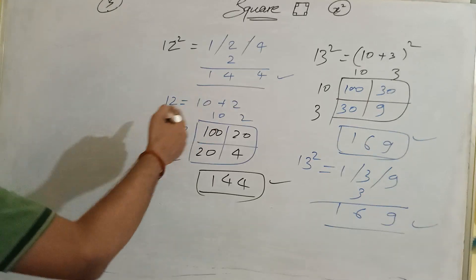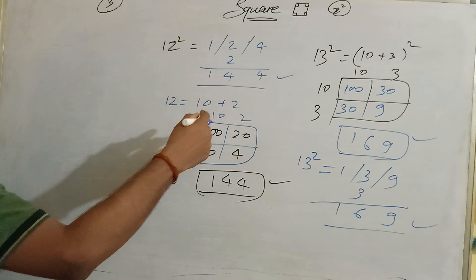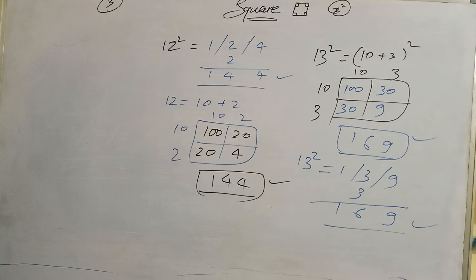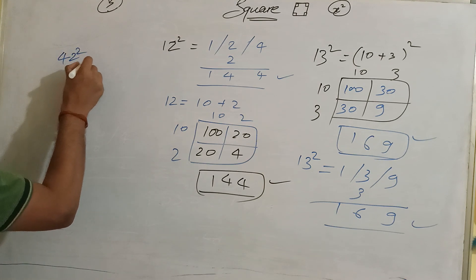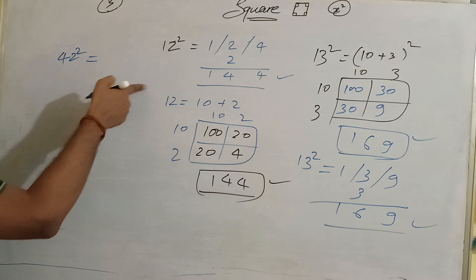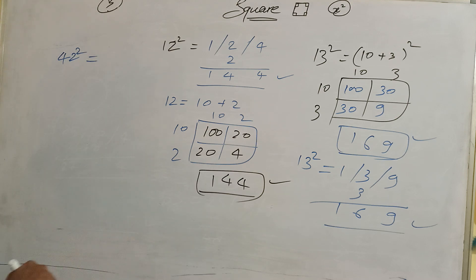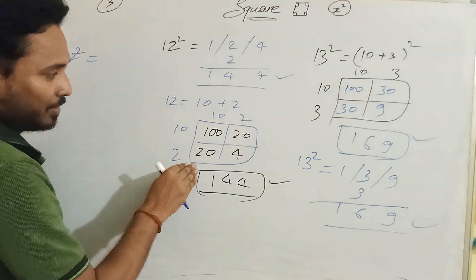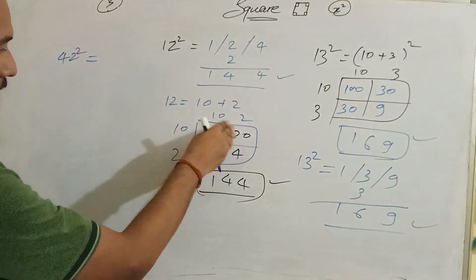We should move on. We will take a higher number. Now we will take 42 square with the help of previous method, because this method is taking time to add the numbers.